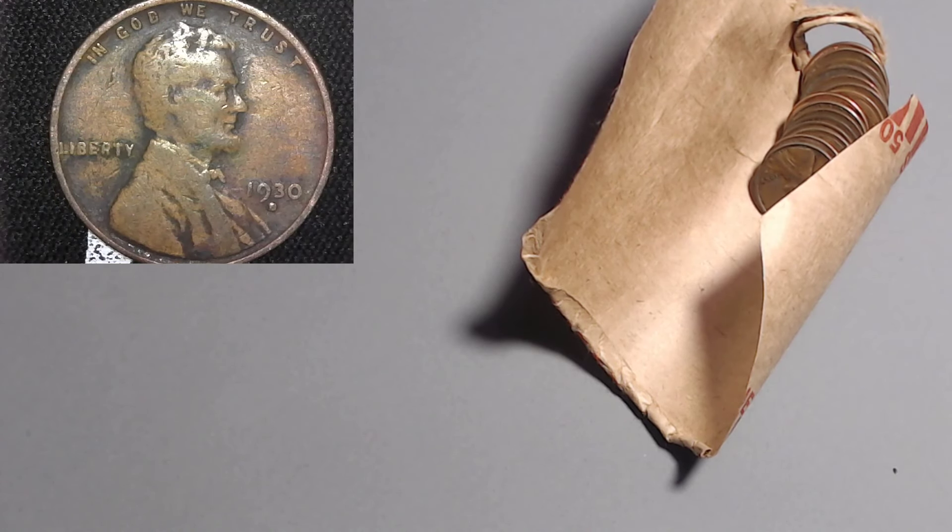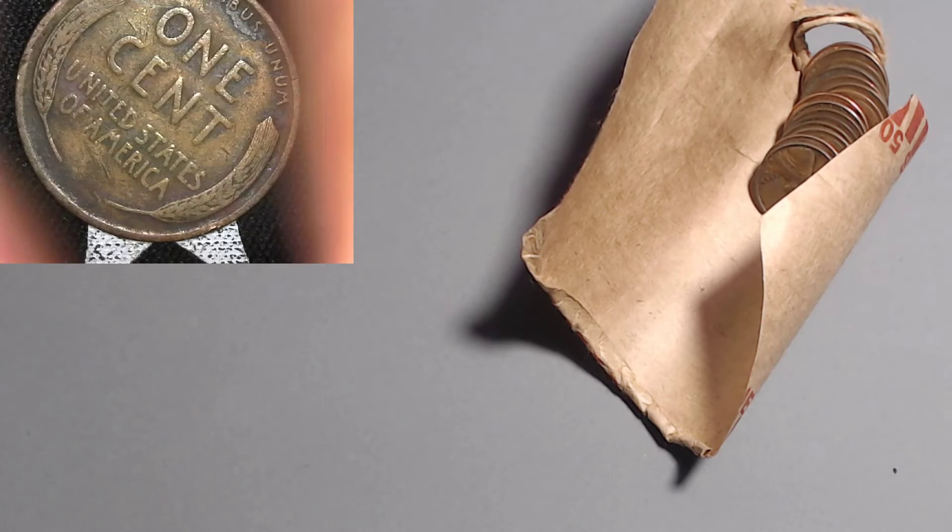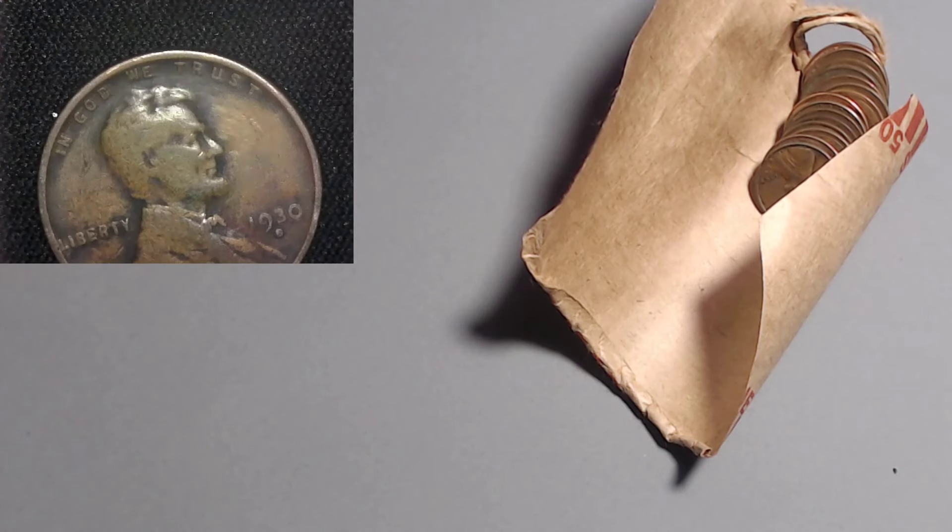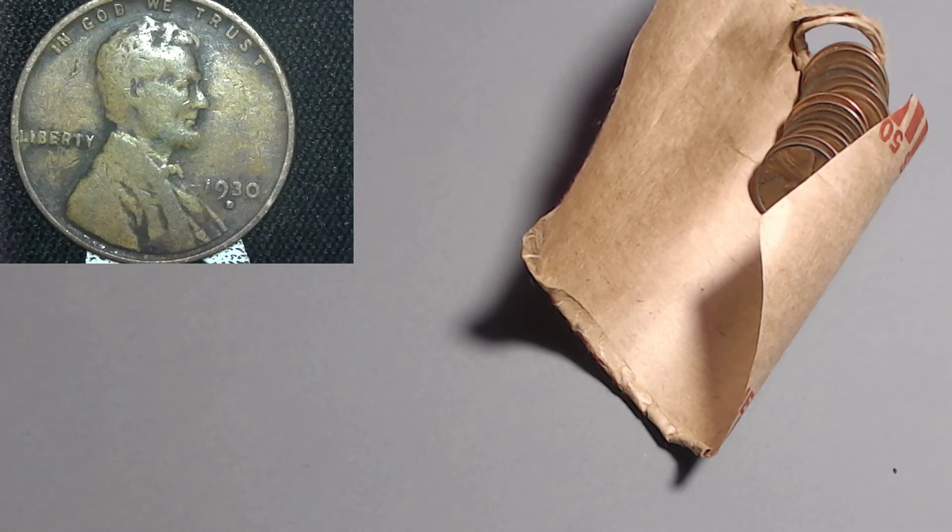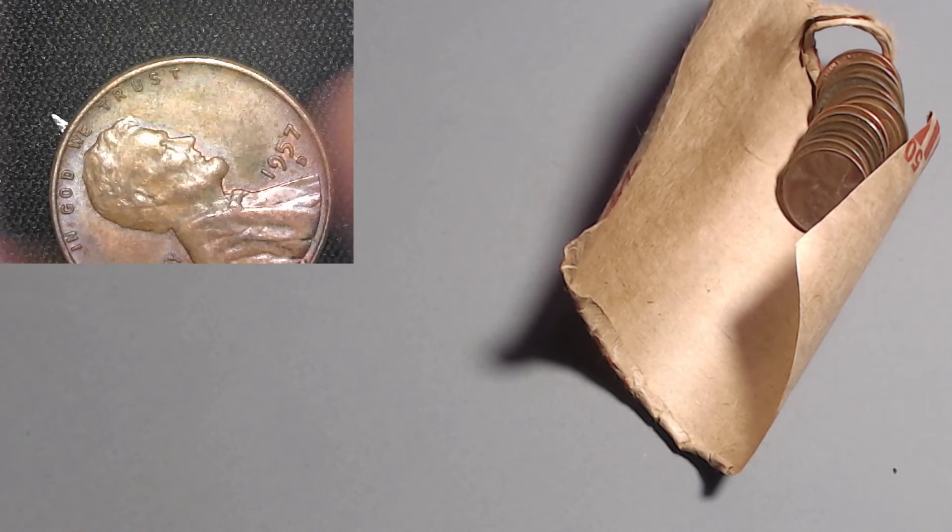It's got some contrast going on there. Some crusty crustals. That's what I'm going to start calling them, crustals. Anyway, makes it easy to read the worn writing with that darker dirt. Or whatever you want to call it. I will take that. 1930 Denver. And moving along.